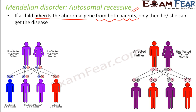Now in case one of the parents gets affected — meaning they have two small r's — the possibility of a child getting affected also increases. In this case, you do not see any unaffected child; all the children would either be affected or they would be carriers. That's the pattern of autosomal recessive disorder.